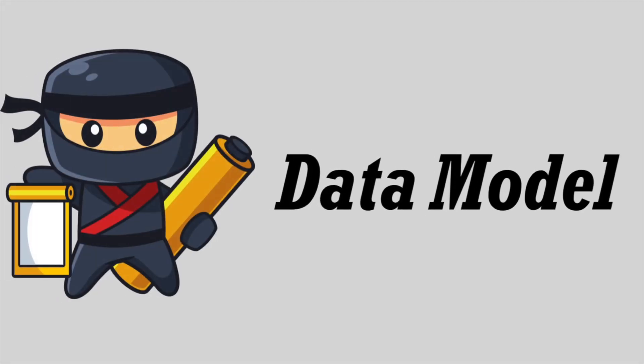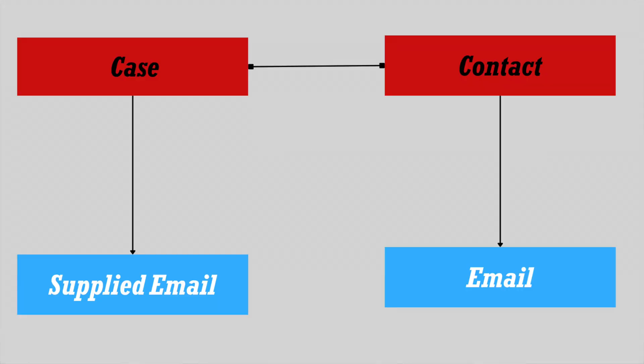First, we will understand the data model. So in this scenario, we are going to use two objects: Case and Contact. On the Case object, we have a field called Supplied Email, which is of email type, and on the Contact object, we have an Email field. So this is the data model.